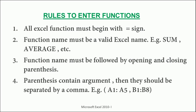There are four rules for entering functions - very simple, very important, and easy to learn. First, all Excel functions must begin with an equal-to sign. Second, the function name must be a valid Excel name - for example, you cannot write 'avg' for AVERAGE. Third, the function name must be followed by opening and closing parentheses. Fourth, within those parentheses we pass the arguments.